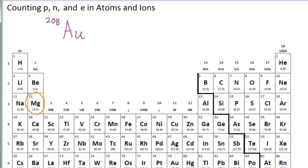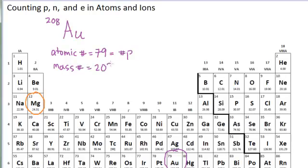AU is gold, and it is down here on the periodic table. It has an atomic number of 79, and that is also the number of protons. The 208 is the mass number. The number of neutrons can be determined by taking the mass number and subtracting the number of protons — protons plus neutrons equals 208, so there would be 129 neutrons. 129 plus 79 equals 208 — always double-check that math. Since there is no charge written on this symbol, the number of electrons is exactly the same as the number of protons, which is 79.